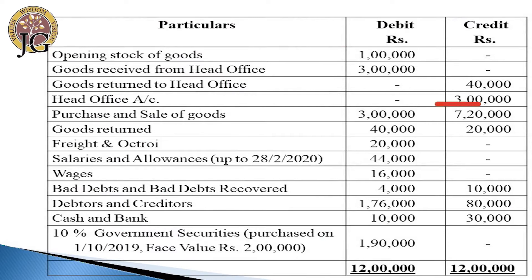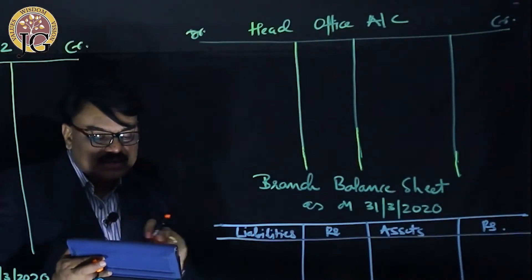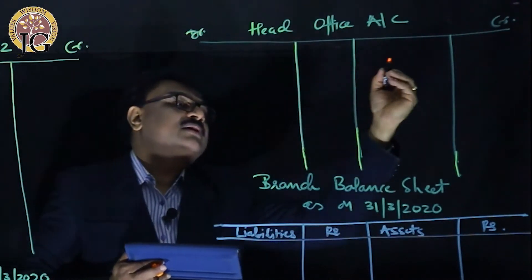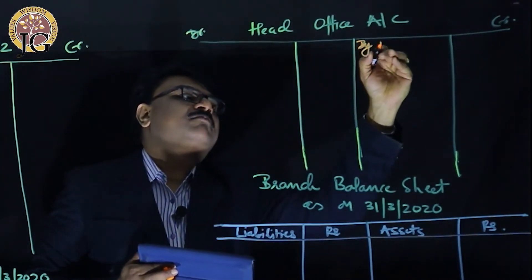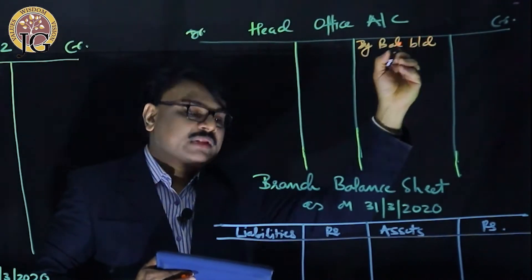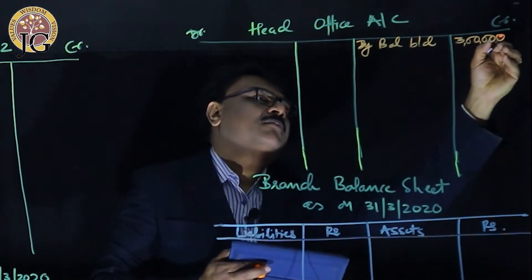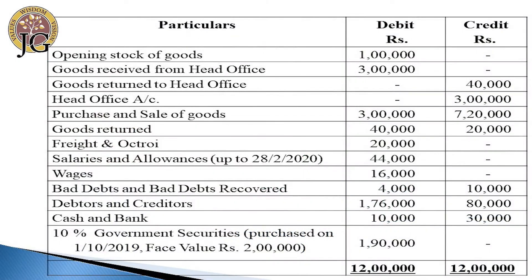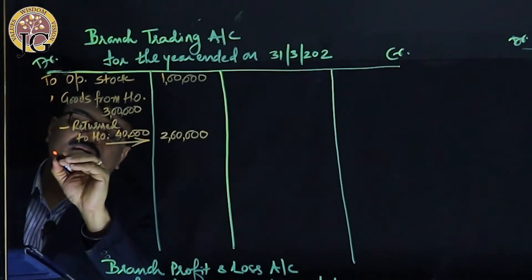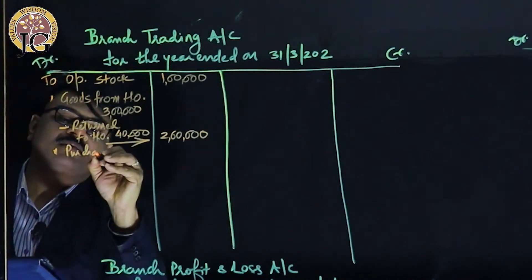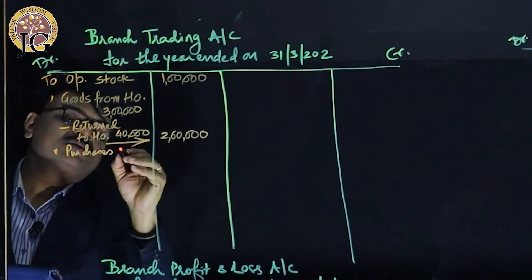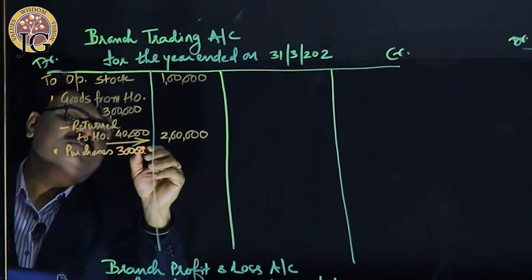The opening balance of head office account is nothing but the opening balance of capital account and it always has a credit balance. We record it on the credit side: by balance b/d, amount ₹3 lakhs. Purchases will be debited to the trading account in the inner column: ₹3 lakhs.